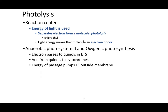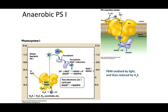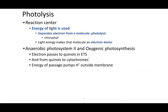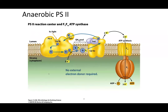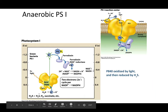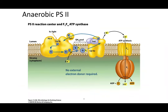Now photosystem II is present in oxygenic photosynthesis. Photosystem I is completely anaerobic — no oxygen involved — but photosystem II actually involves oxygen. An electron passes to quinols in the electron transfer chain, from quinols to cytochromes, eventually pumping protons outside and generating energy. High-wavelength light comes in with no external electron donors required, unlike the anaerobic system that uses hydrogen sulfide. The end goal here is not just to generate ATP but also to generate carbon.